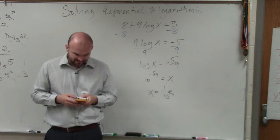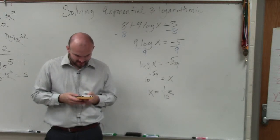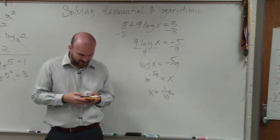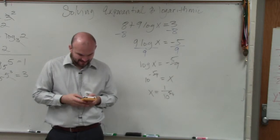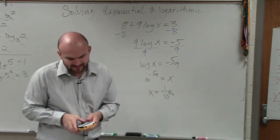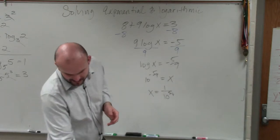So I'd type this in my calculator, 1 divided by 10 raised to the 5 divided by 9 power. And I get 2.7825, which I'll round to.